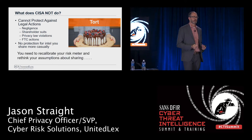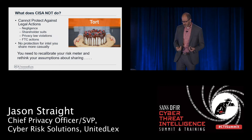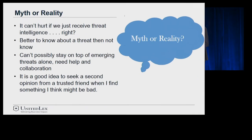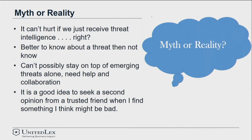Think about casual information sharing as a situation that can create risk just as much as more formal information sharing can. You really need to recalibrate your risk meter and rethink your assumptions about sharing. A lot of people would take these statements for granted: 'It can't hurt if we just receive threat intelligence.' Well, I already talked about how it actually can hurt. 'Better to know about a threat than not know' — we're certainly well past the head-in-the-sand days. But again, if you are aware of a potential threat and you fail to act, you could definitely be in a worse position from a liability perspective than if you hadn't known at all.